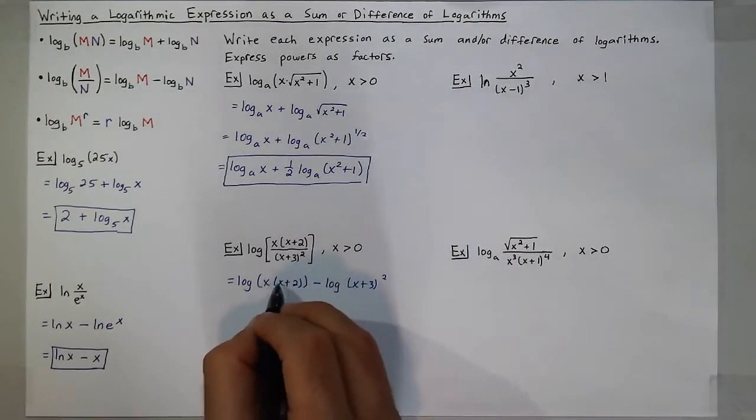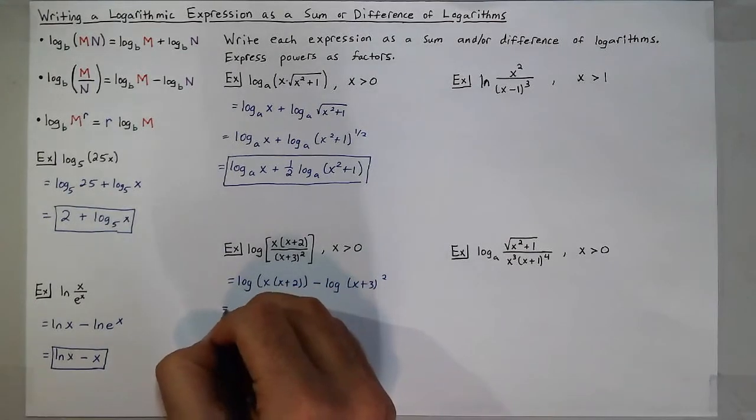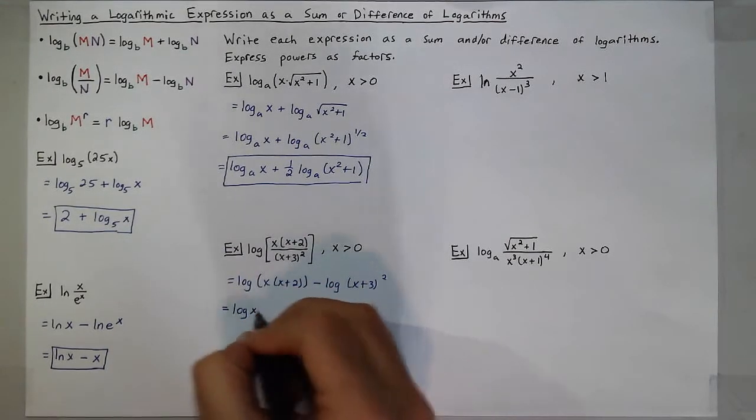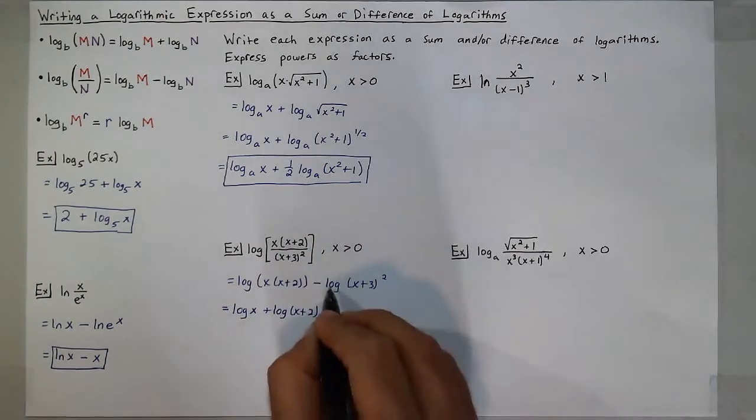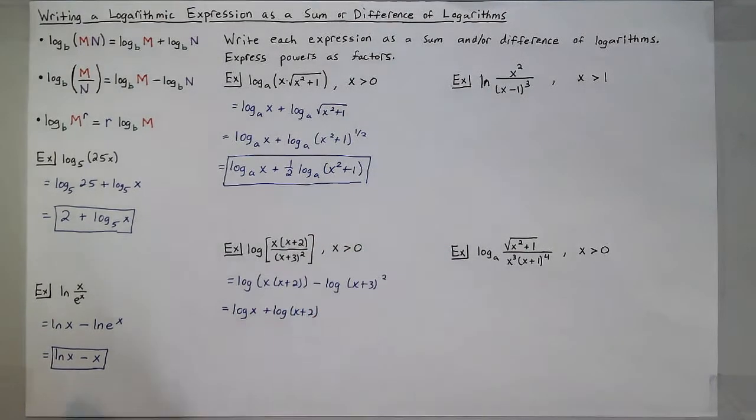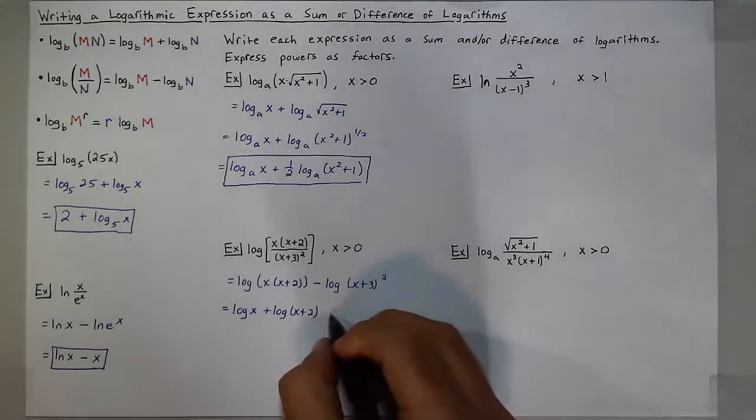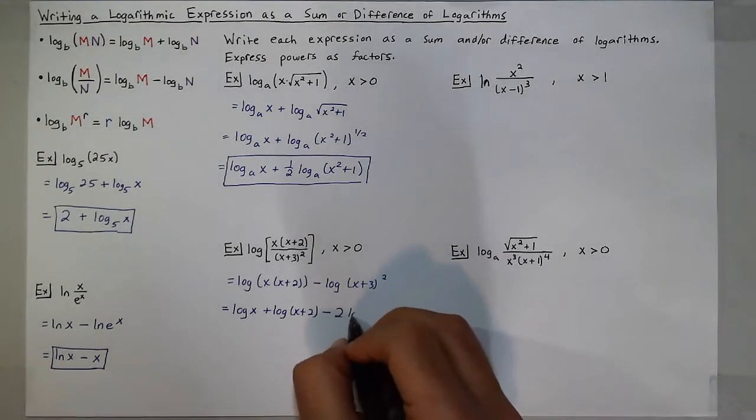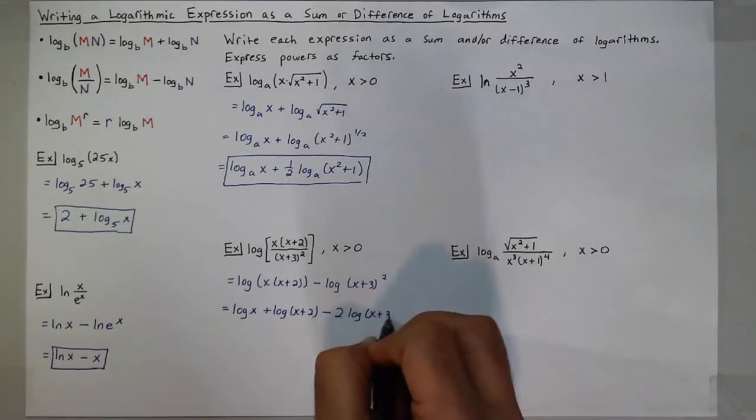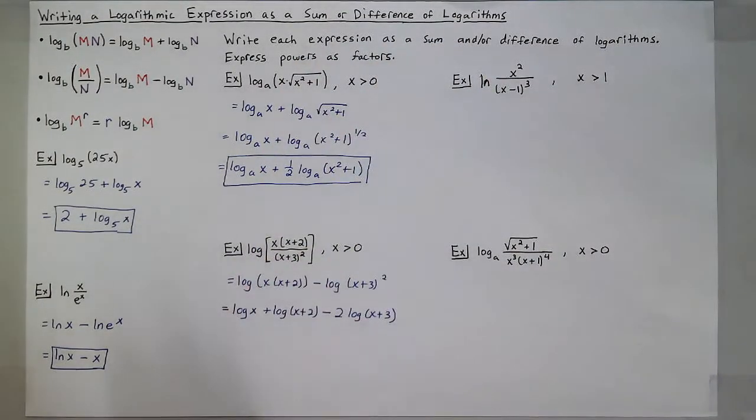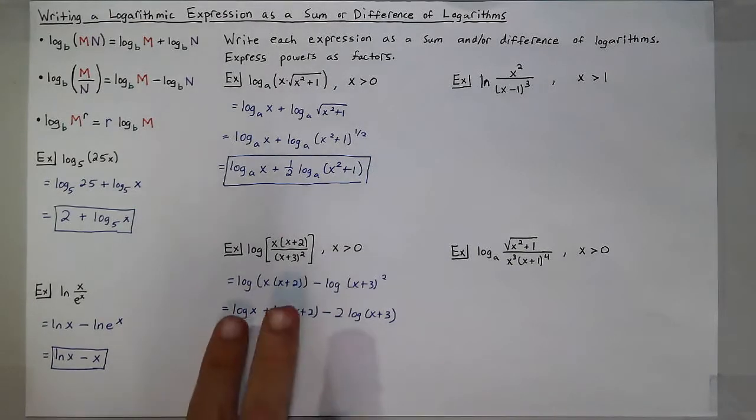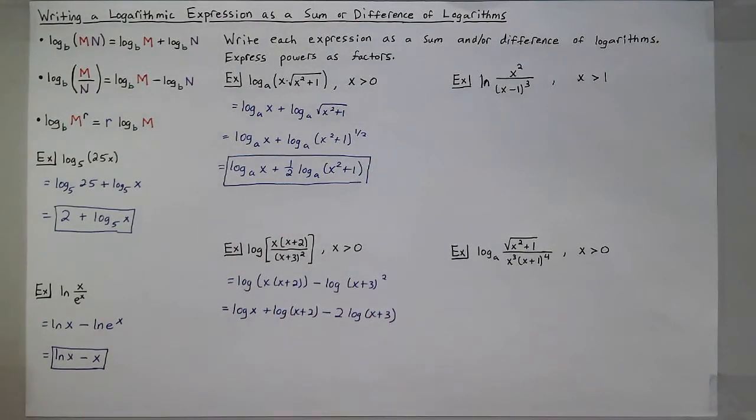Now, on the left, I have x times x plus 2, so that can be separated. So I'll get log of x plus log of x plus 2, and this power will now become a factor, so it'll be minus 2 log of x plus 3. So that is that expanded form, that is a sum or difference, in this case sum and difference, because I have a sum and a difference of the logarithms.